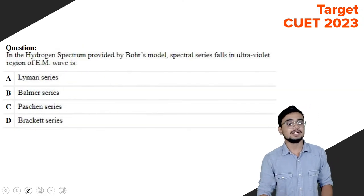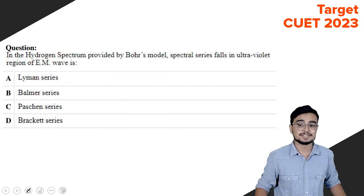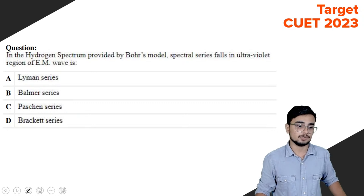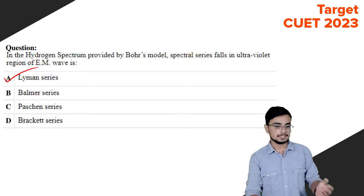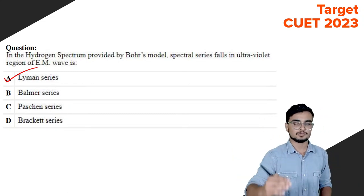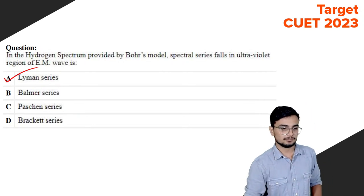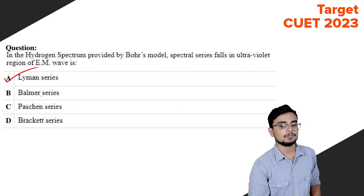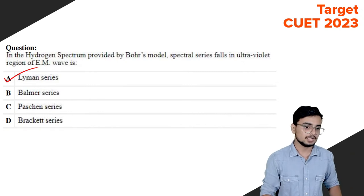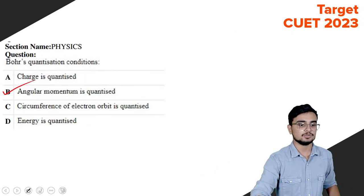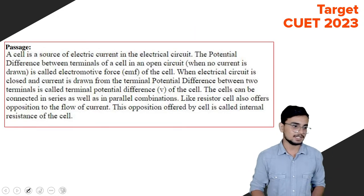In the hydrogen spectrum as provided by Bohr's model, the spectral series that falls in the ultraviolet region of the electromagnetic spectrum is the Lyman series. The Balmer series corresponds to visible light and the Lyman series corresponds to UV light. So the correct answer is the Lyman series.